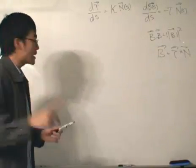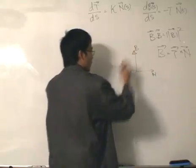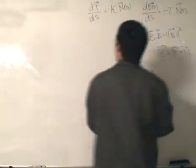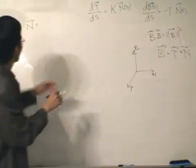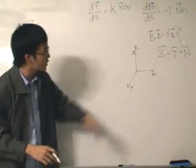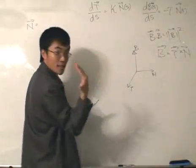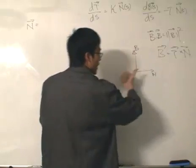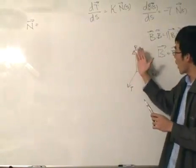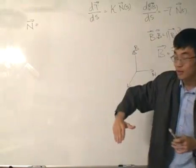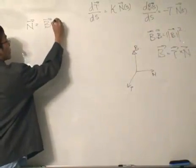Remember the right-handed basis: unit tangent, unit normal, and unit binormal — index, middle, up. Now, we want to represent the unit normal vector. It will be something cross something — obviously, it will be the unit binormal crossed with the unit tangent. But we need to be careful about how we cross it. Using the right-hand rule, sweeping from the B vector down to the unit tangent T gives us the normal vector. So it is B cross T — binormal cross unit tangent.